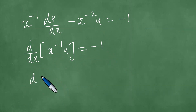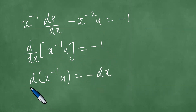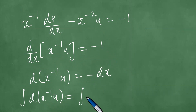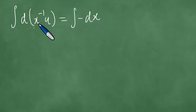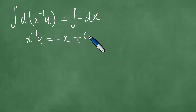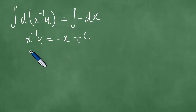We write this as d of x to the minus 1 times u equals minus dx. Integrating both left and right sides, we get x to the minus 1 times u equals minus x plus c.